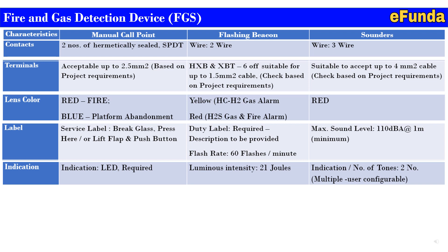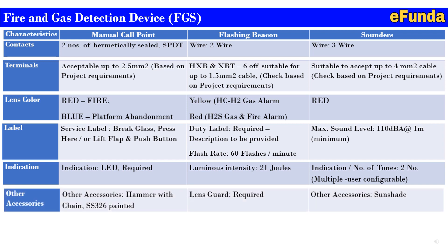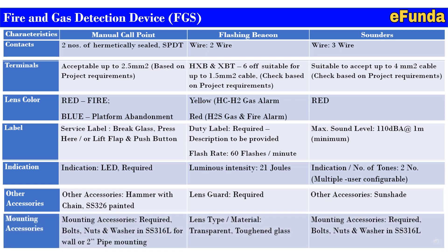Other accessories required: for the manual call point, a hammer with chain in SS326 painted; for the flashing beacon, a lens guard is required as shown in the previous slide; for the sounder, a sunshade is required to protect from direct sunlight exposure. Additional mounting accessories: for the manual call point, bolts, nuts, and washers in SS316L for wall or two-inch pipe mounting; for the flashing beacon, lens type or material is transparent or toughened glass; for the sounder, bolts, nuts, and washers in SS316L material.